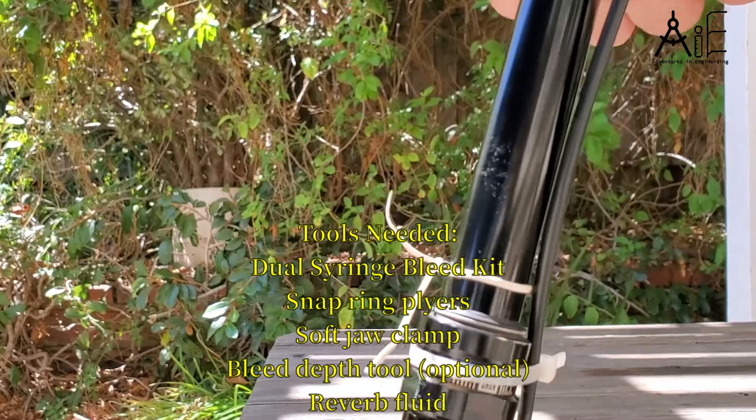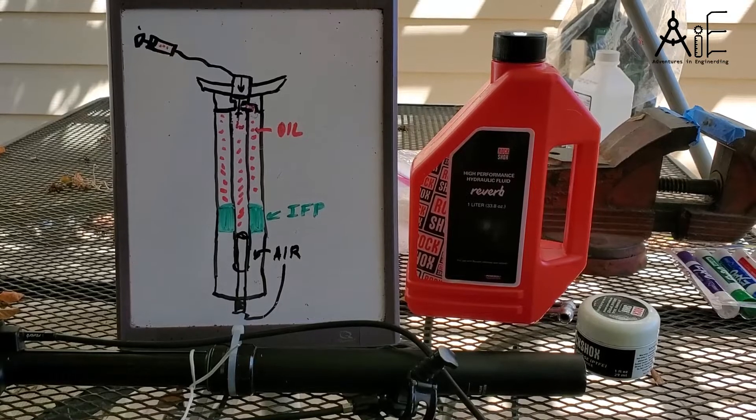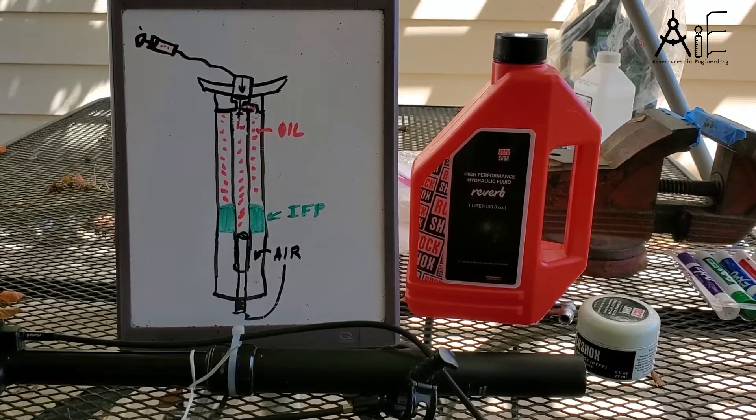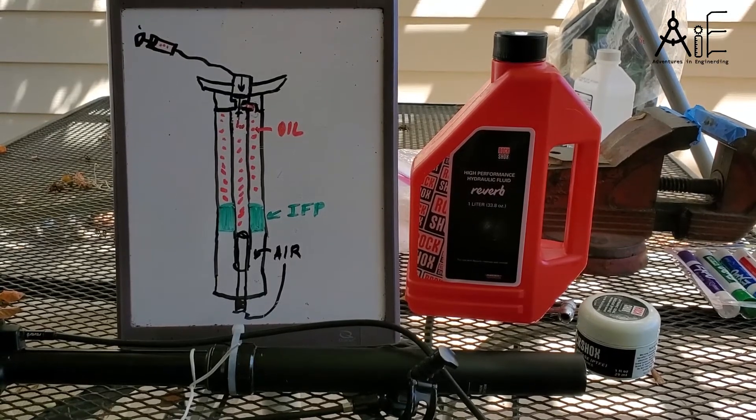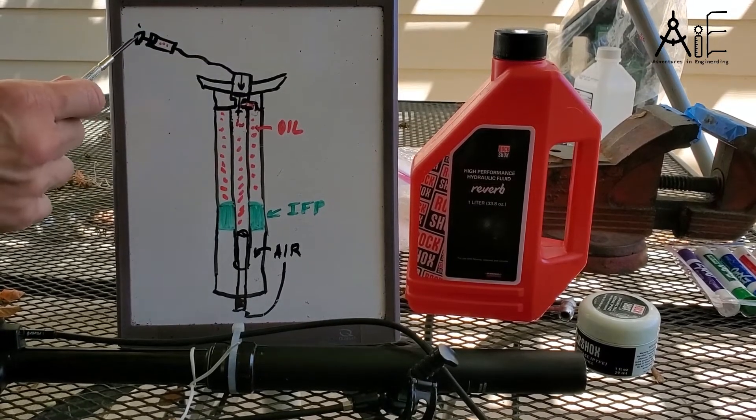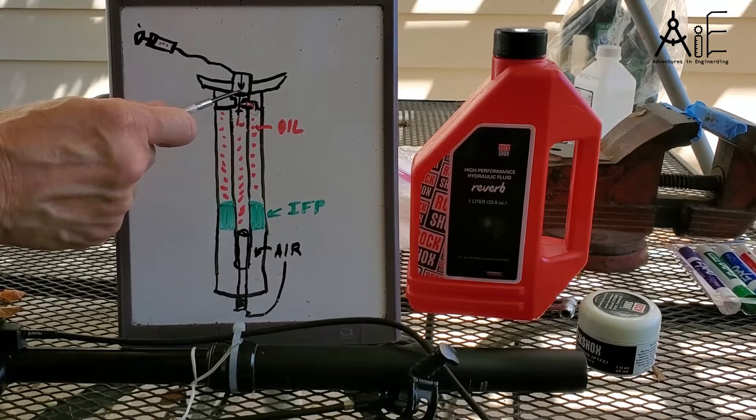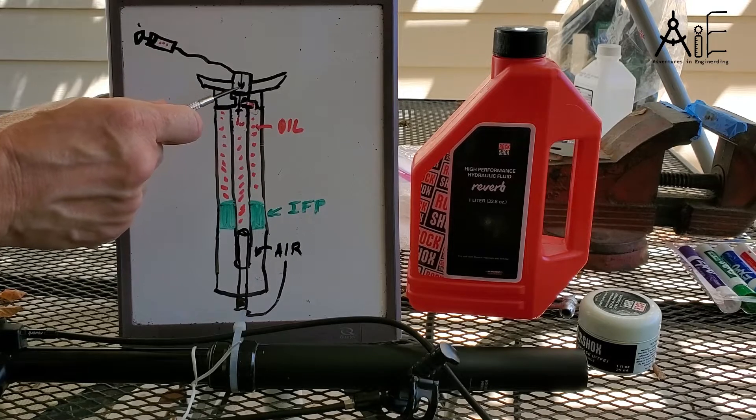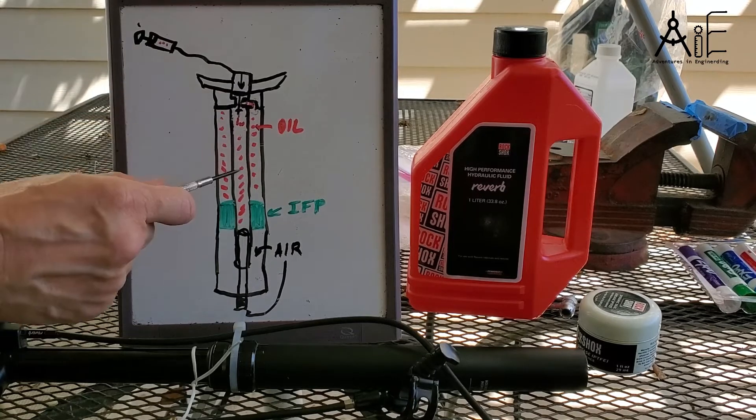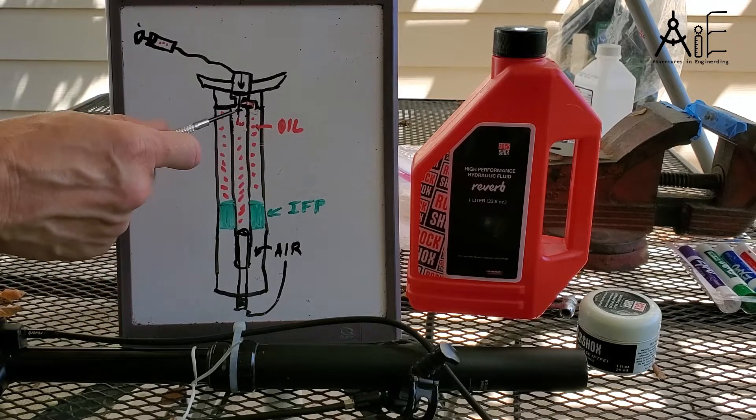A Reverb dropper post has two separate hydraulic systems. One is for the push button on your handlebar, which pushes fluid down and pushes the poppet valve down. But that fluid only goes to here, does not affect what's inside of the seat post. The seat post itself has a much bigger hydraulic system.